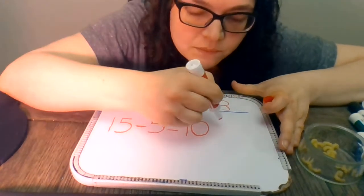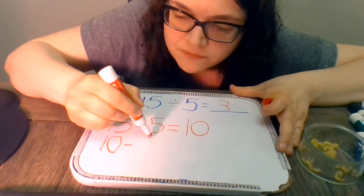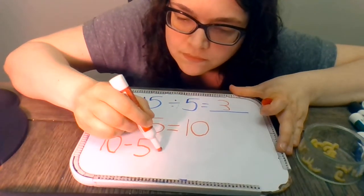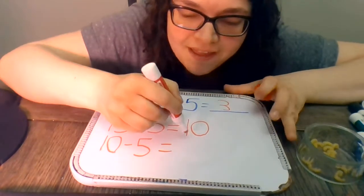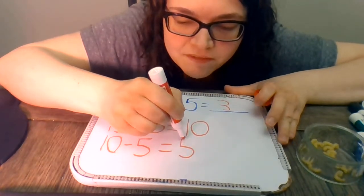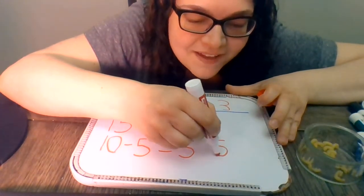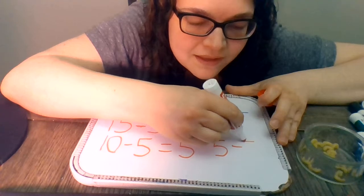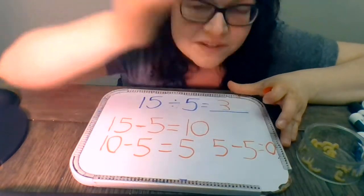All right. So then we do 10 take away 5. I think you know that from your fingers. 10 take away 5 is another 5. And then of course we have 5 take away 5. And that will equal 0.